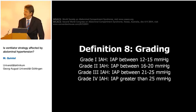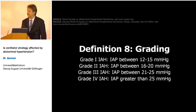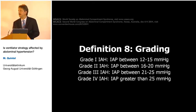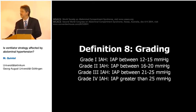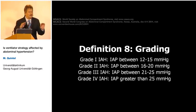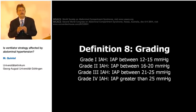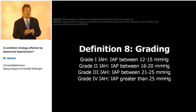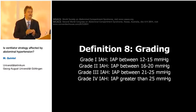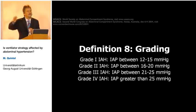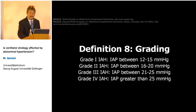The grading definitions are: grade 1 — intra-abdominal hypertension between 12 and 15 mmHg; grade 2 — 16 to 20; grade 3 — 21 to 25; and grade 4 is greater than 25 mmHg. We now understand that probably not the degree of intra-abdominal hypertension itself, but much more the abdominal perfusion pressure — at least with regard to the abdominal organs — is the most important part.